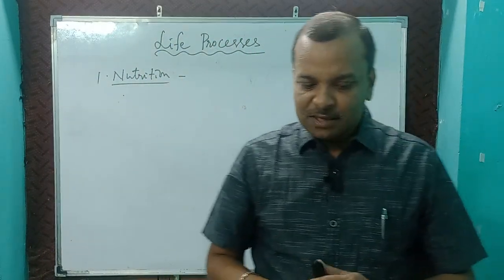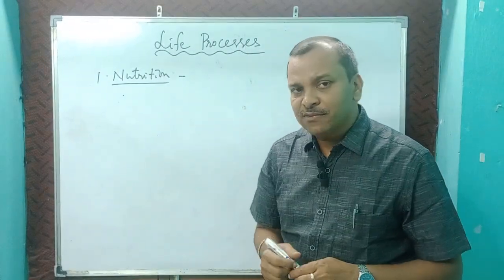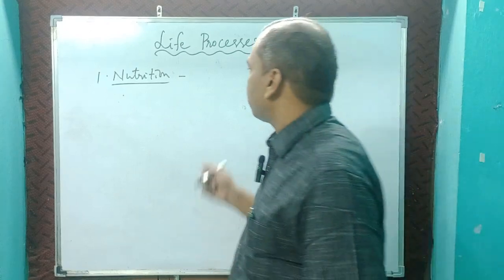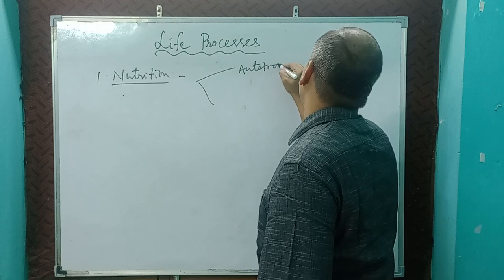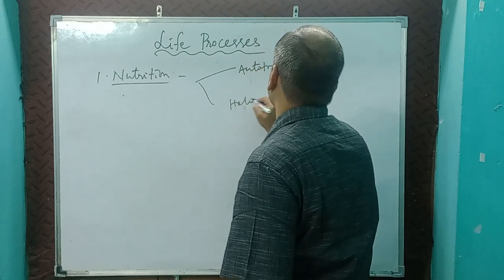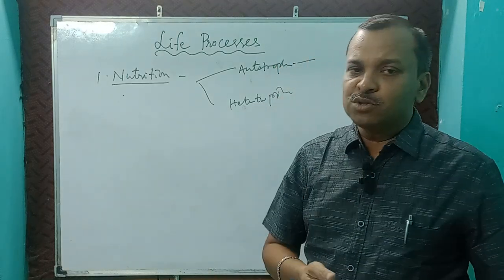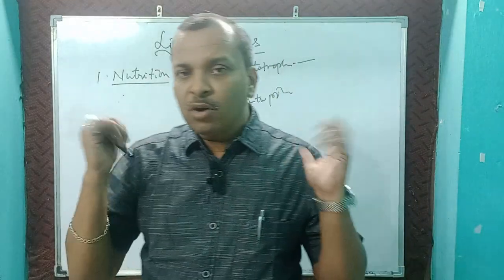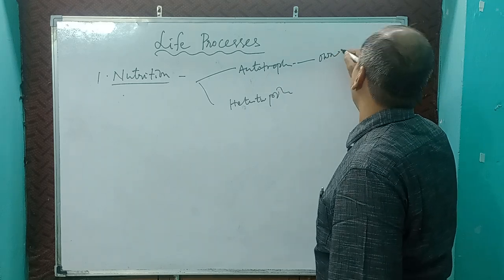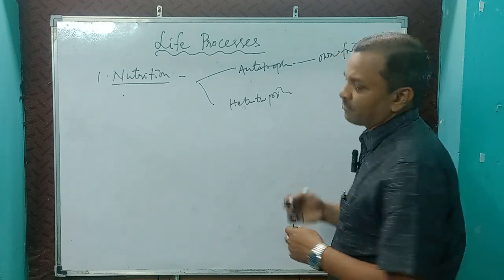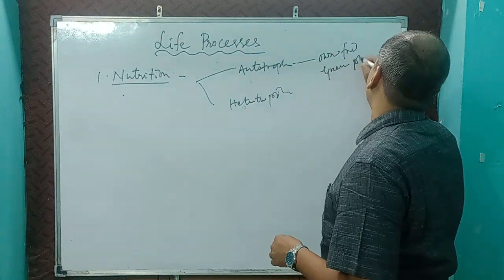Nutrition is the process when we intake food and utilize it. There are two types of nutrition: autotrophic and heterotrophic. Auto means automatically — those who can prepare their own food are autotrophic. Like green plants, they can prepare their own food.